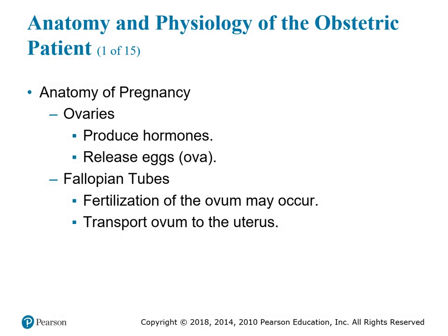The anatomy of pregnancy: the ovaries produce hormones and release eggs, also known as ova. The fallopian tubes — fertilization usually occurs at the fallopian tubes, where the sperm meets the egg or the ova, and the fallopian tube also serves as transport for the ovum to the uterus, where it actually gets embedded.